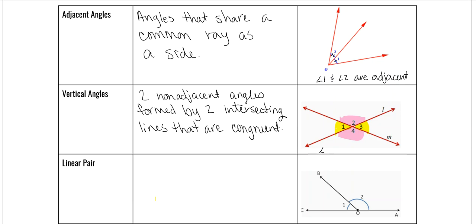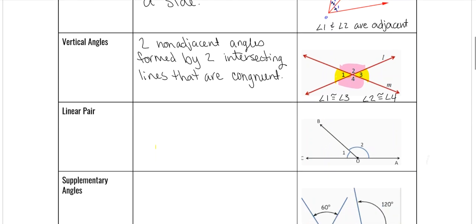Any time that you use congruent, you do not have to use the little m — in other words, measure — because measure means that we're talking about an actual number. So you just write the angle. So angle two is congruent to angle four. If you were writing the measure of angle one, it would be equal to the measure of angle three. But we can't say that unless we know the real numbers. Measure is only used when we're talking about numbers, just like equal. Congruent is only used when we're not talking about actual degrees.